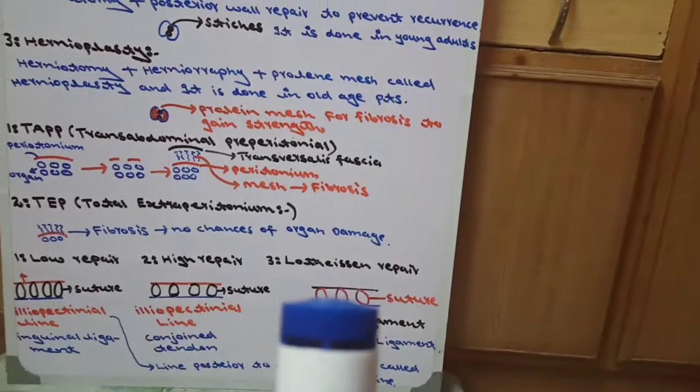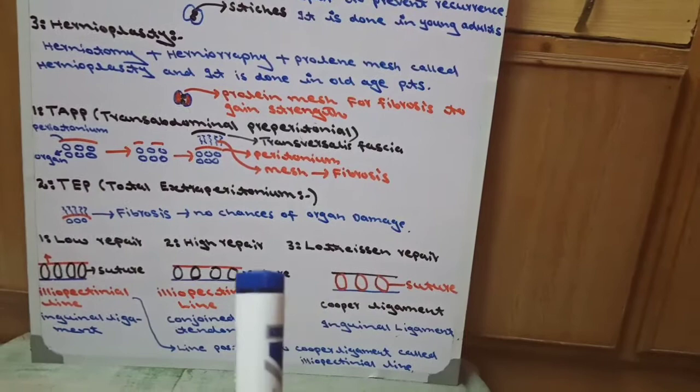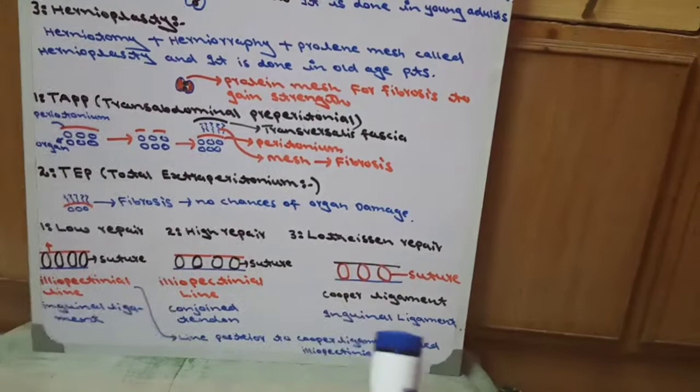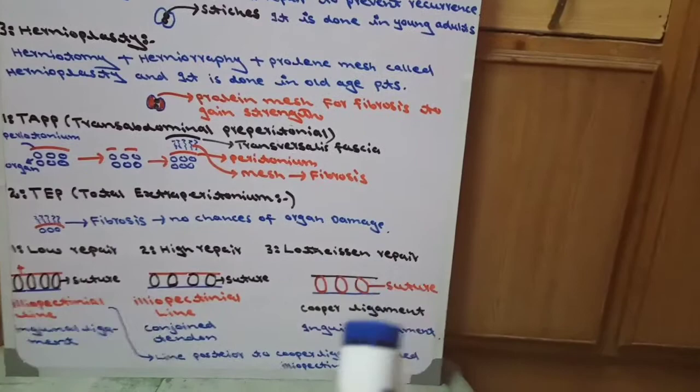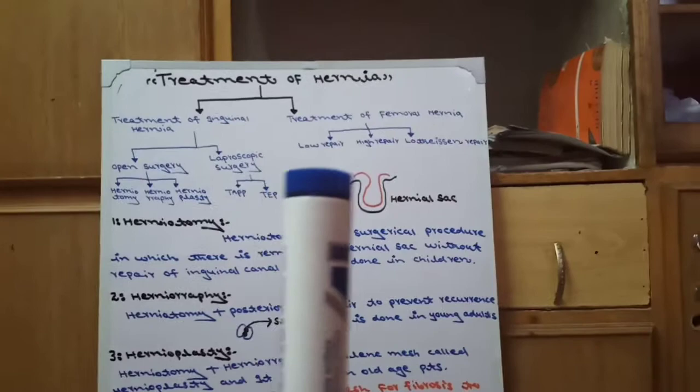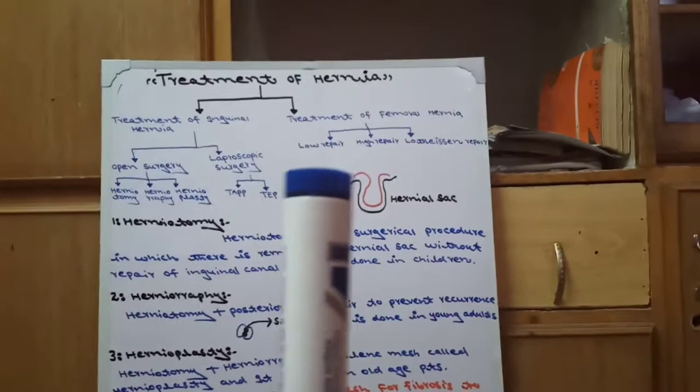Third is low tension repair. In low tension repair, the red line is ileopectineal line, black is Cooper's ligament, and blue is inguinal ligament. Here we suture Cooper's ligament and inguinal ligament together. We call it low tension repair. So for femoral hernia: low repair, high repair, and low tension repair are complete.